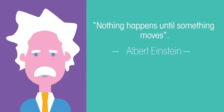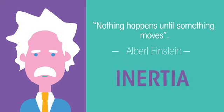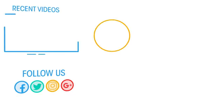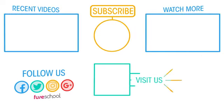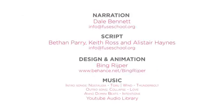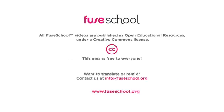So what did Einstein mean when he said nothing happens until something moves? He was talking about inertia. If you liked the video give it a thumbs up and don't forget to subscribe. Comment below if you have any questions. Why not check out our few school app as well? Until next time.